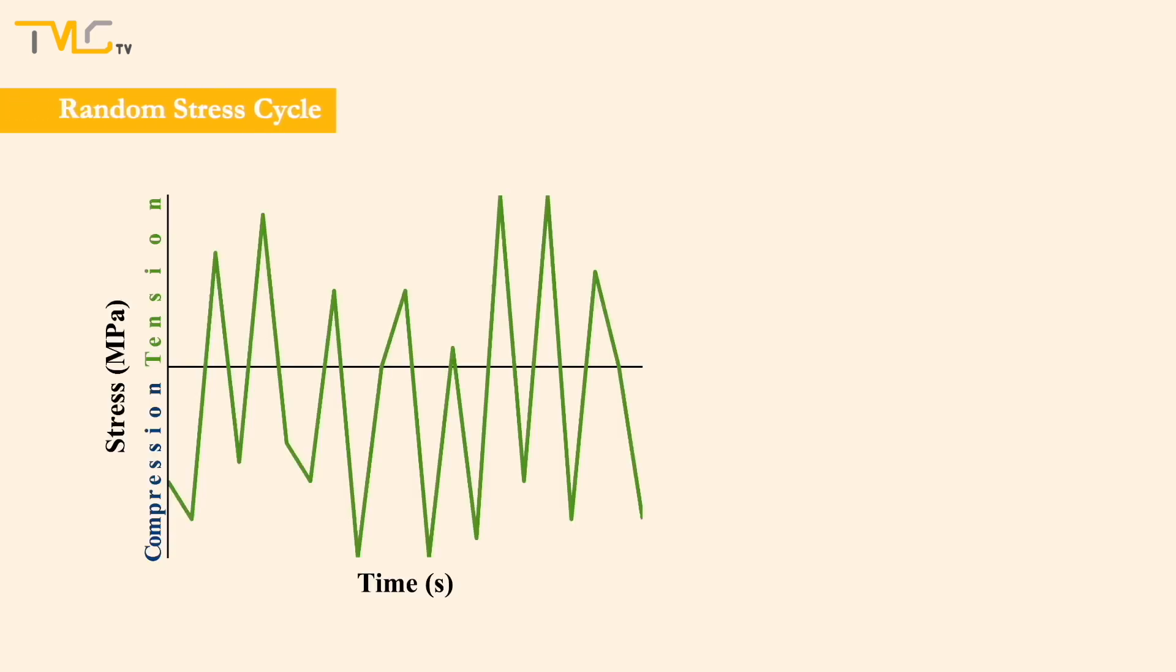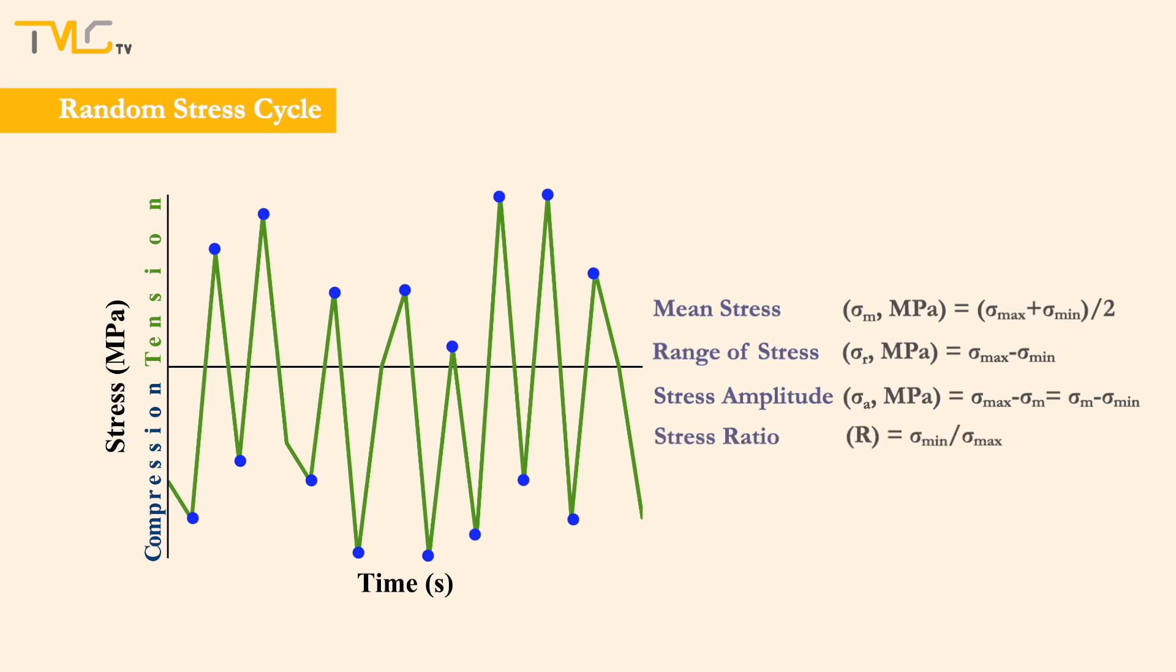The last stress time mode observed in fatigue loading is the random stress cycle, in which the stress level may vary randomly in amplitude and frequency. Hence, we cannot talk about a constant mean stress, range of stress, stress amplitude, or stress ratio values. Similar to the applied stress amplitude and frequencies, they will fluctuate too.